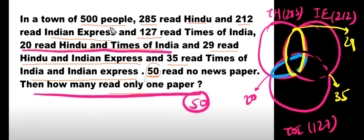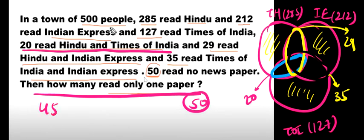Now, to find how many read only one newspaper, we need to remove the common portions — the intersections. For only Hindu readers, remove the overlapping parts. The common people are those in the intersections: 20 plus 35 plus 29. We apply A union B union C minus the intersections.